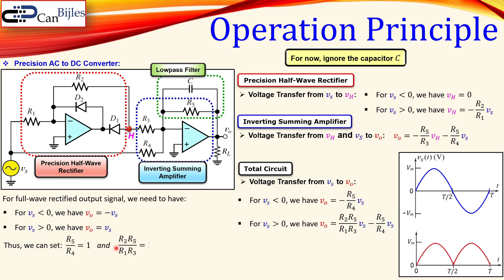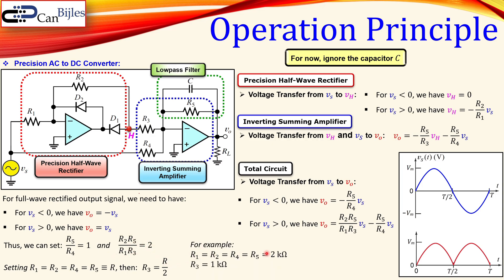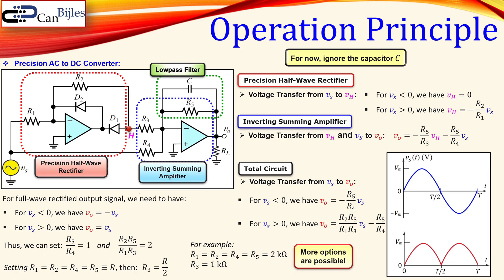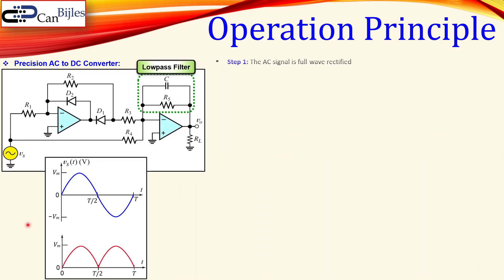There are many options since we have only two equations and several unknowns. If we set R1 = R2 = R4 = R5 = R, then R3 must be R/2. For example, if all these resistors are 2 kΩ, then R3 needs to be 1 kΩ because of this R/2 relationship. More options are possible — this is not the only valid choice.